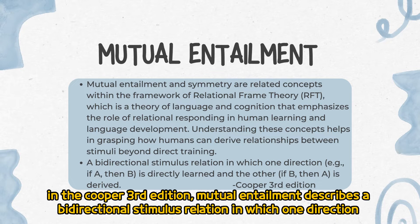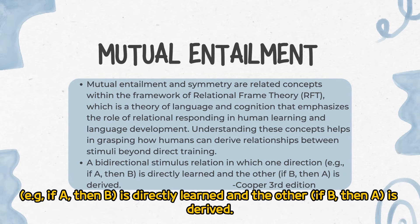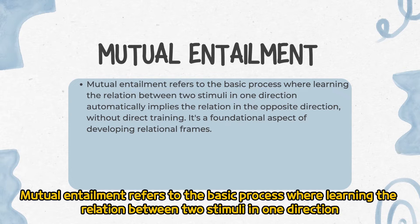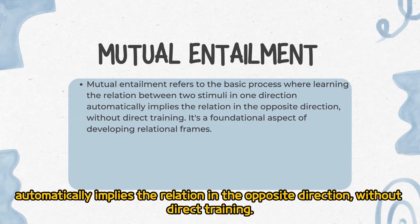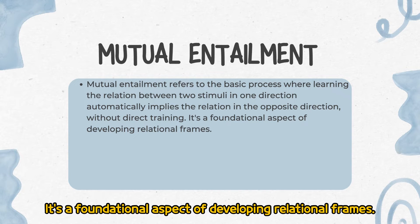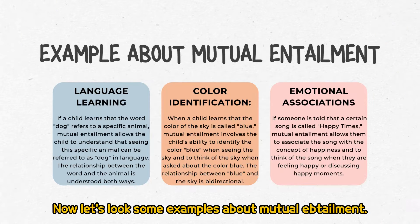Mutual Entailment describes a bidirectional stimulus relation in which one direction — for example, if A then B — is directly learned, and the other — if B then A — is derived. Mutual entailment refers to the basic process where learning the relation between two stimuli in one direction automatically implies the relation in the opposite direction without direct training. It is a foundational aspect of developing relational frames.